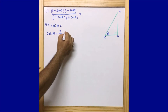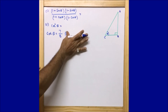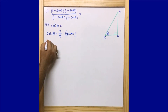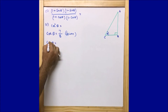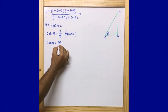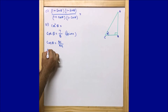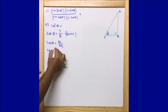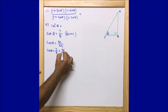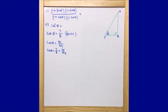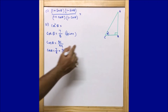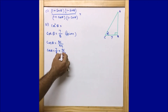So cot θ = 7/8 is given, which equals BC / AB. In other words, cot θ = BC (adjacent side to angle θ) / AB (opposite side). Since cot θ = 7/8, this is in the ratio 7:8, meaning BC = 7 and AB = 8.